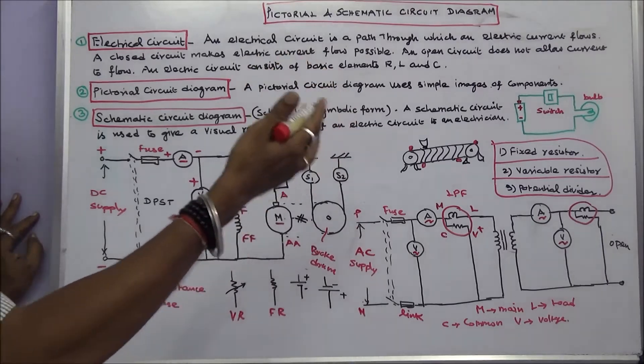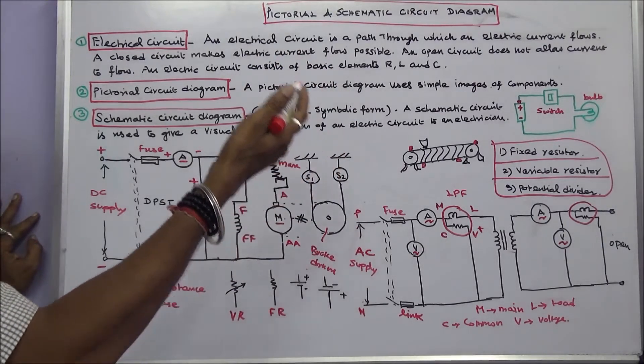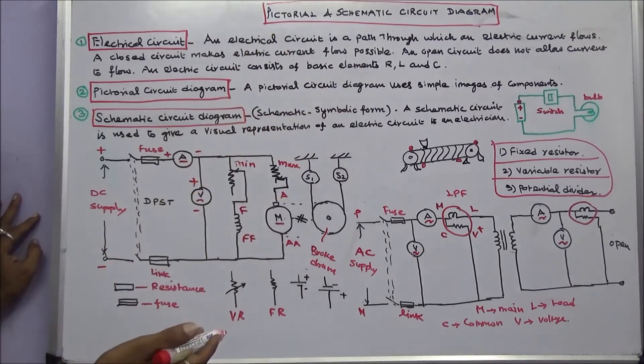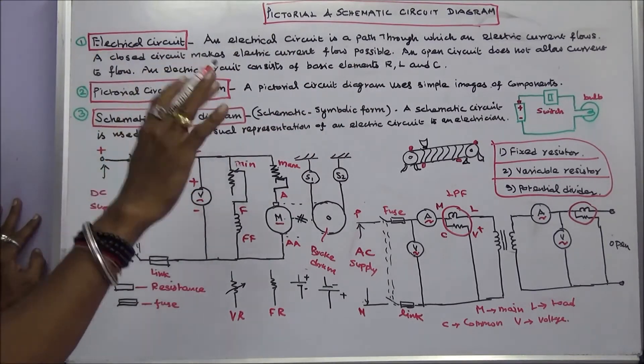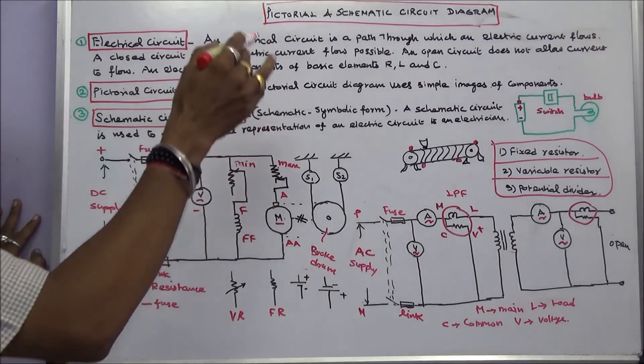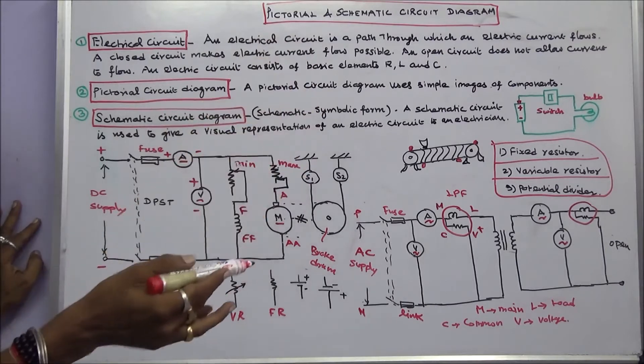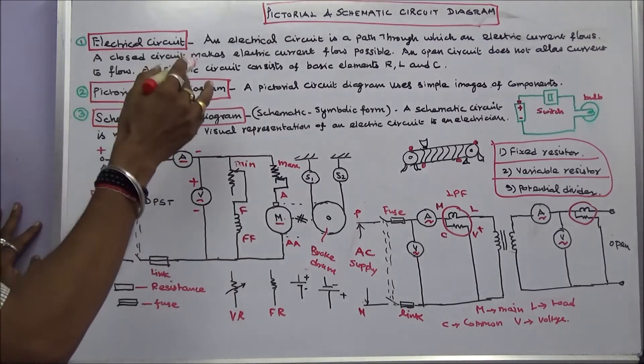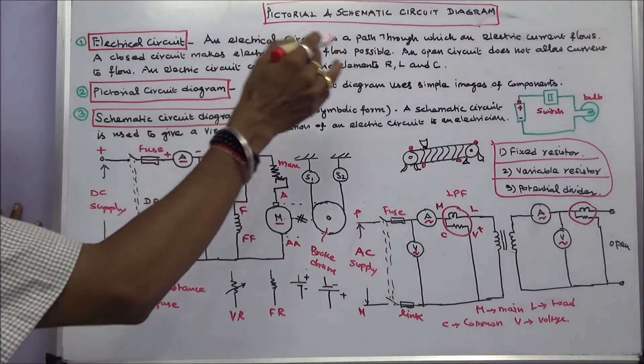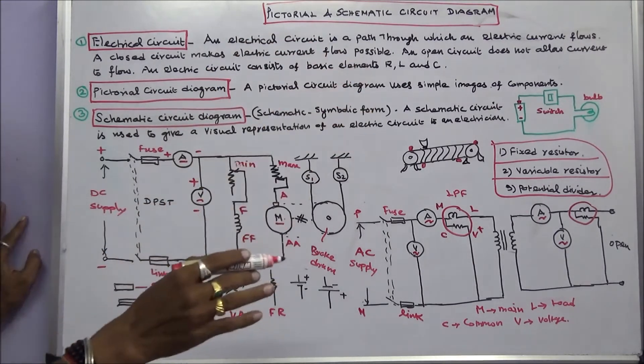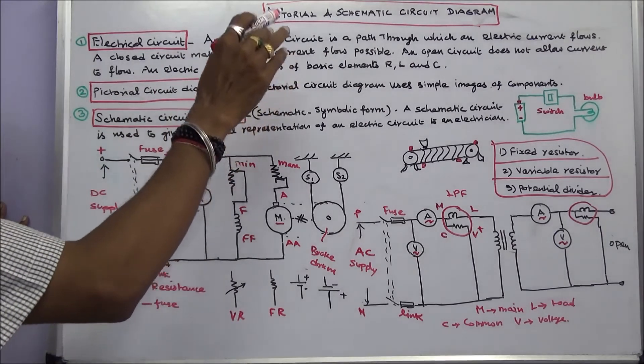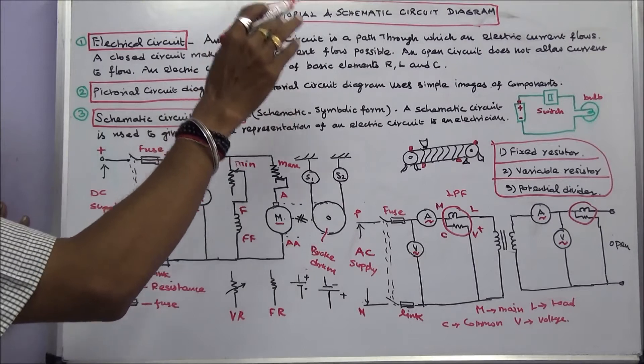In this class we discuss the difference between pictorial circuit diagram and schematic circuit diagram. First term is electrical circuit. An electrical circuit is a path through which an electric current flows. A closed circuit makes electric current flow possible. An open circuit does not allow current to flow. An electric circuit consists of basic elements: resistor R, inductor L, and capacitor C.